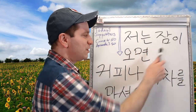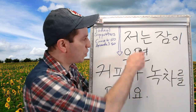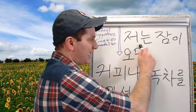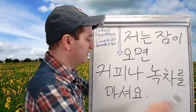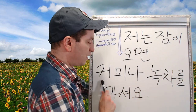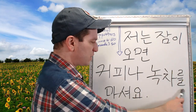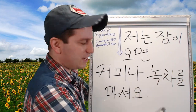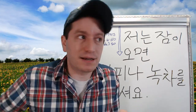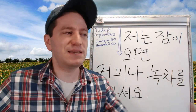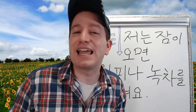저는 잠이 오면 커피나 녹차를 마셔요. '저는 잠이 오면' means 'when I feel sleepy.' '커피나 녹차' means 'coffee or green tea.' '마셔요' means 'I drink.' So: when I feel sleepy, I drink, you know, coffee or something like green tea.